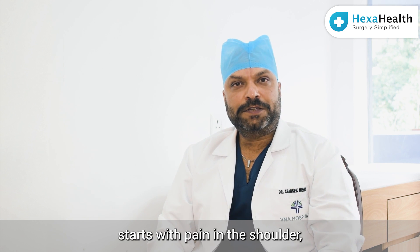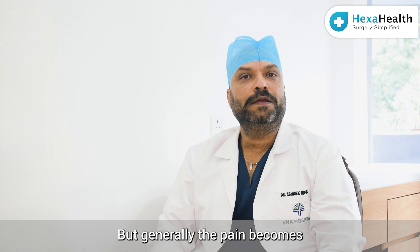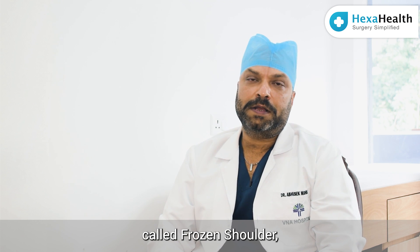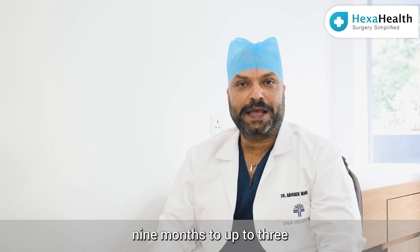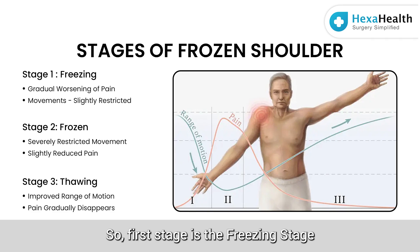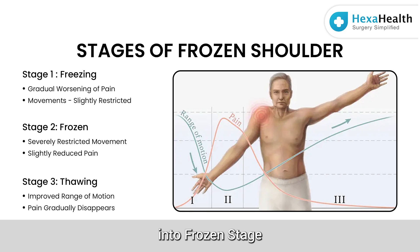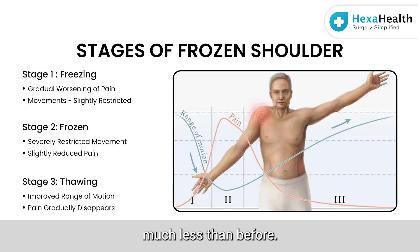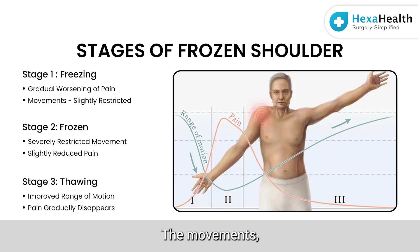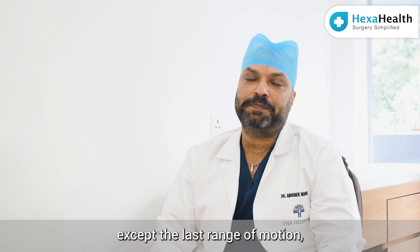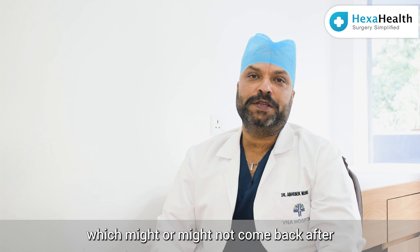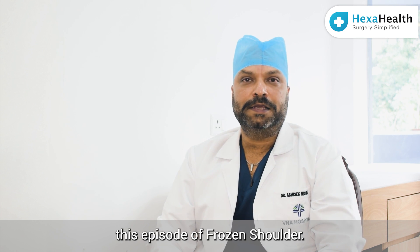Frozen shoulder usually starts with pain in the shoulder which may be mild to begin with, but generally the pain becomes severe over time. The natural history of frozen shoulder is such that once it starts, it might take anywhere from six months to up to three or four years to resolve. The first stage is the freezing stage, when the patient primarily has pain and slight restriction of movement. This can develop into the frozen stage, where the patient has mostly difficulty with movement but the pain becomes bearable. The last stage is the thawing stage, in which, just like ice melts, the disease gradually disappears — movements tend to come back and the pain becomes almost negligible, except possibly the terminal range of motion.